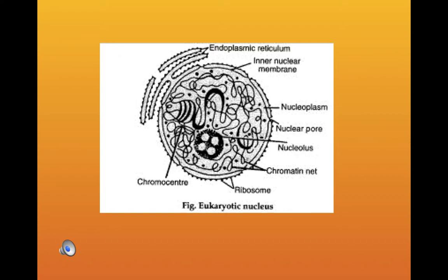When a normal unstained living cell is observed under a light microscope, its nucleus may not appear to contain anything particular inside. But when the same cell is stained with suitable dyes, several structures become noticeable in the nucleus. In all probability, you may be looking at a non-dividing stage of the cell called interphase.